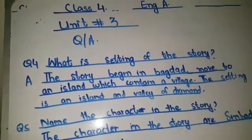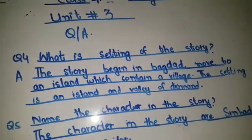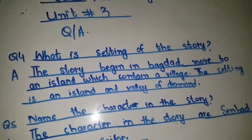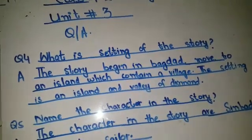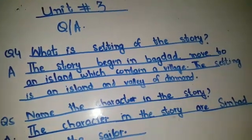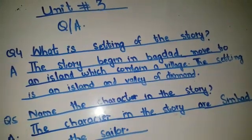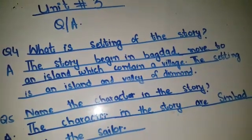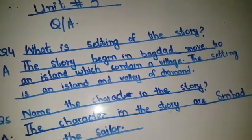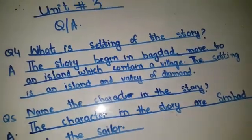Now take out your neat copies and write question number 4 of Sinbad and the Sailor. What is the setting of the story? The story begins in Baghdad, moved to an Iceland which contains a village. The setting is an Iceland and valley of diamond.